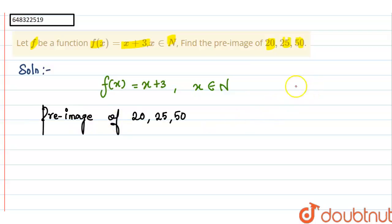Pre-image means, for example, you can take, you can represent it by the Venn diagram. This is A, domain, this is B, codomain.